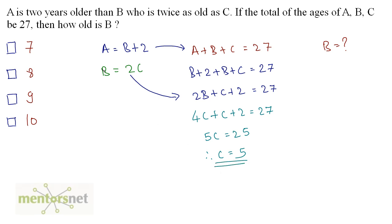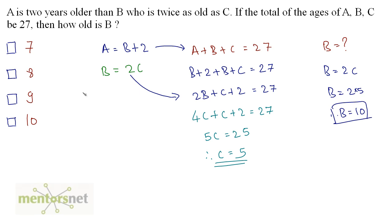C is 5 and B is 2C. So B is equal to 2 times 5. So B's age is 10 years. So option D is the right answer.